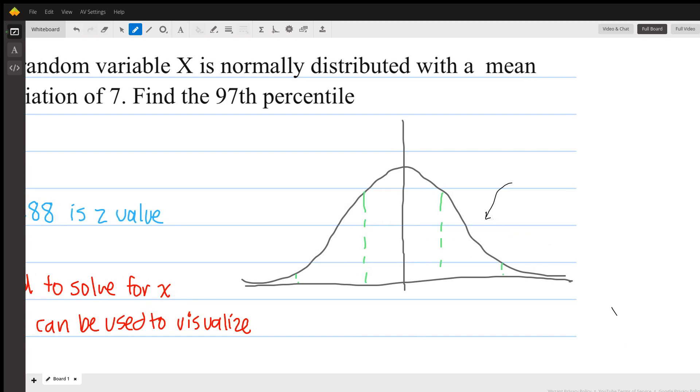So since the mean is 50, that is going to be the number in the middle, and since the standard deviation is 7, each standard deviation, depending on what direction you go, is either going to be 7 more than 50 or 7 less.